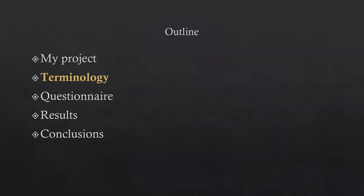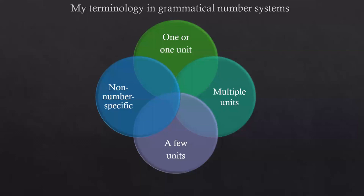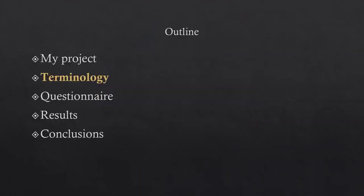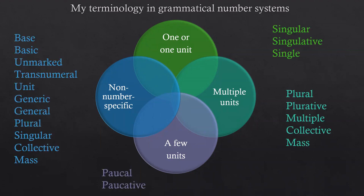Let's see the terminology I adopted and why. These circles represent the number values I encountered in Cushitic: one or one unit at the top; multiple units on the right; a few units at the bottom; and non-number specific forms on the left. In the literature I found many terms referring to these values: base, basic, unmarked, transnumeral, unit, generic, general, plural, singular, collective, and mass — all potentially referring to non-number specific nouns or markers.